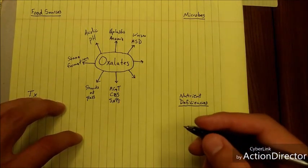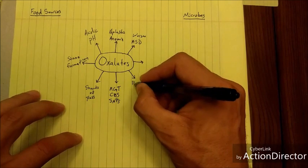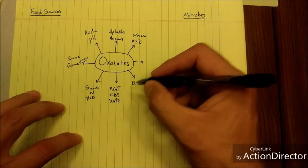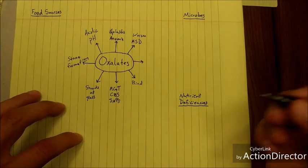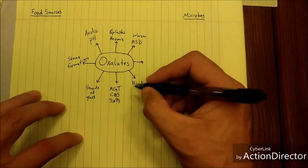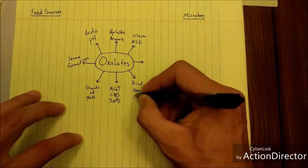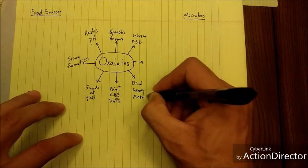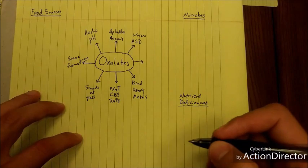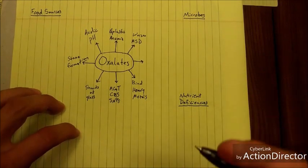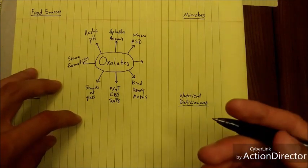Oxalates very strongly bind heavy metals. And unlike EDTA, which they match the affinity for heavy metals of EDTA, whereas EDTA is a chelating agent, oxalates bind the heavy metals, but they don't chelate them or remove them from the body. They chelate them and hold them very strongly inside your body, so they increase your toxic load from heavy metals.